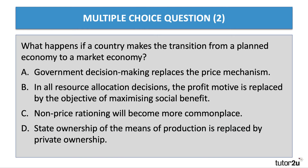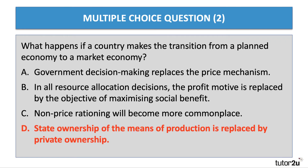Question two: what happens if a country makes the transition from a planned economy to a market economy? This question is about a transition country moving from a command economy to a market economy. The answer is D — state ownership is replaced by private ownership, perhaps through privatization. Option A is wrong — it's the other way around; the price mechanism would tend to replace government decision making. The profit motive would replace social objectives, so B is wrong. Non-price rationing becomes less commonplace, not more, as you move towards the market.